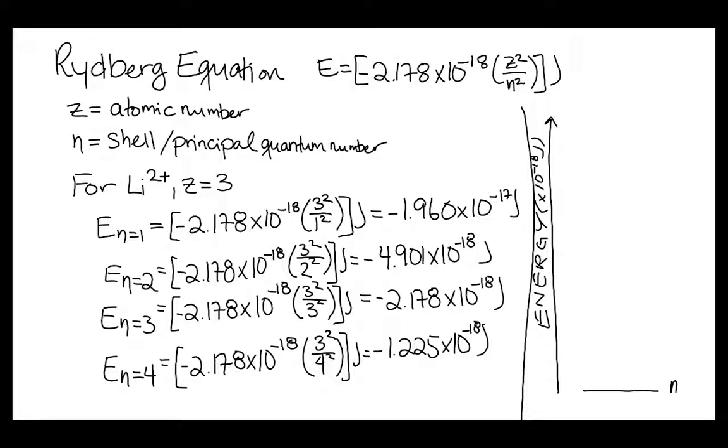And so all the way at the bottom, we will have the n equals 1 shell, which has a value of negative 19.6 in this case.